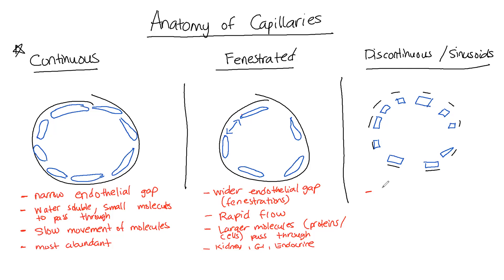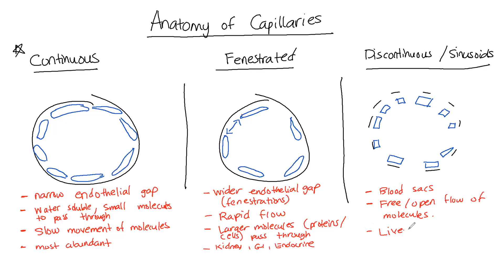Sinusoids represent the larger end of the spectrum branching from fenestrated capillaries. They are essentially blood-filled sacs with a free, open flow of molecules, which in some areas is ideal — like in the bone marrow. Examples include the liver, the bone marrow, and the spleen. The spleen is where red blood cells are recycled after they die, so we need that transfer of cells to get into the spleen as well.